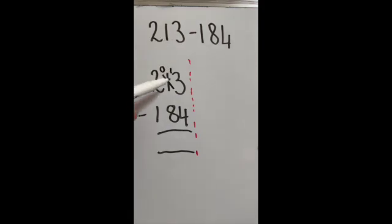Into the units column. Now I've got 13, and I need to take away four, which is nine. There's nothing take away eight—I can't do that, so I need to go next door into the hundreds column and borrow a hundred.